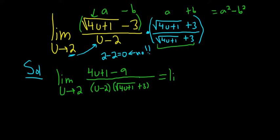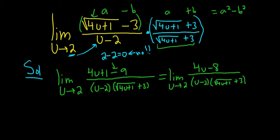Let's keep going. We have to write the limit sign again as u approaches 2. So 4u plus 1 minus 9, that's going to be 4u minus 8. Then we still have all the stuff on the bottom: u minus 2, parentheses, square root 4u plus 1 plus 3.